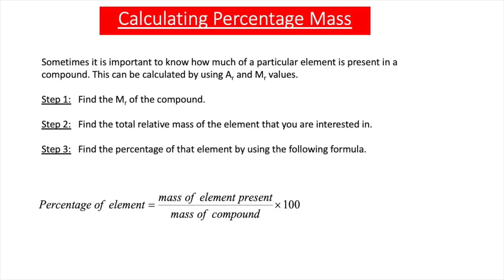Some exam boards will ask you to calculate the percentage mass of a particular element present in a compound. This can be calculated using the AR and MR values. Step one is to find the MR of the compound. Step two is to find the total relative mass of the element you're interested in. Step three is to find the percentage of that element using the formula: percentage of the element equals the mass of the element present divided by the mass of the compound, times 100.